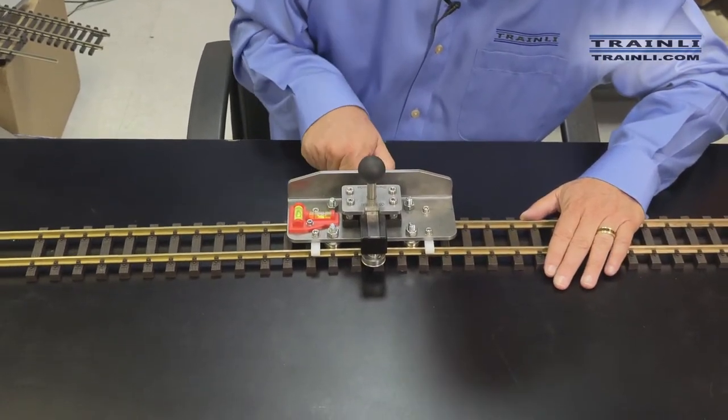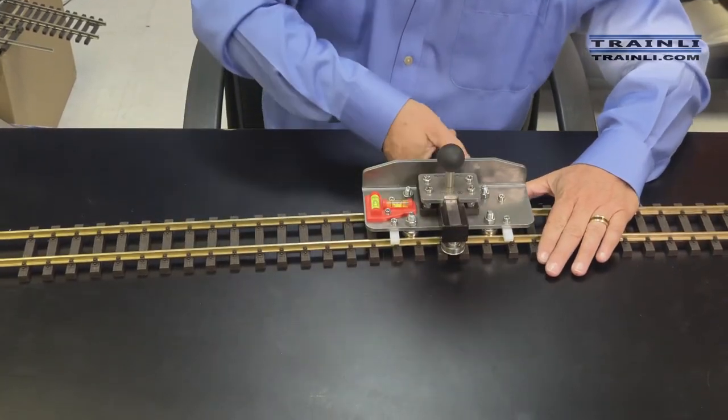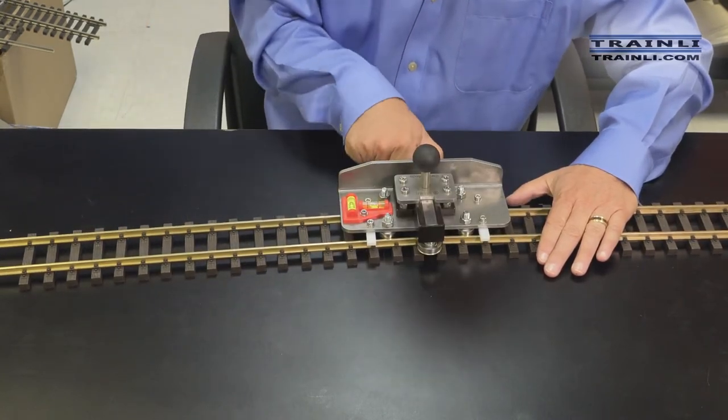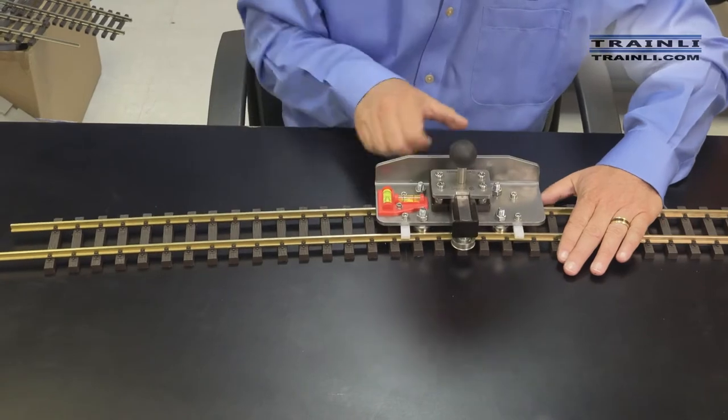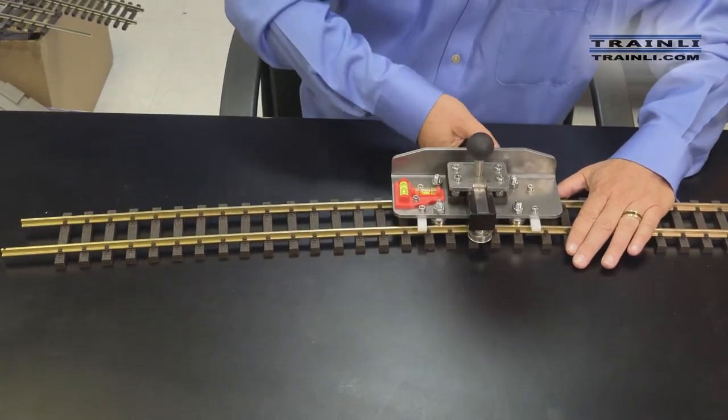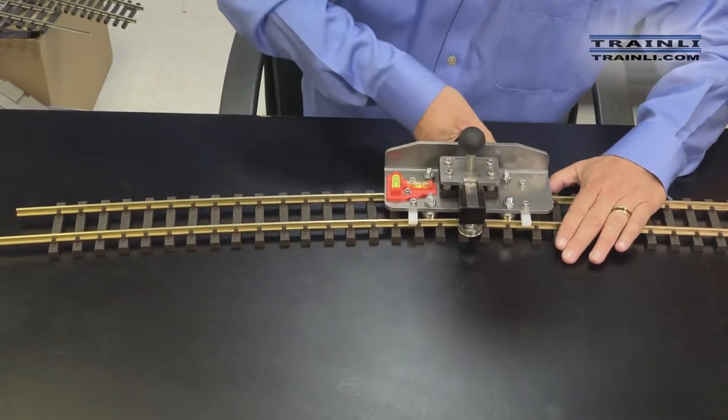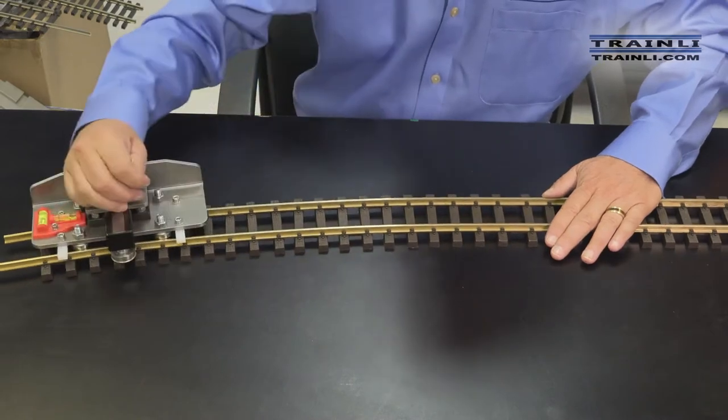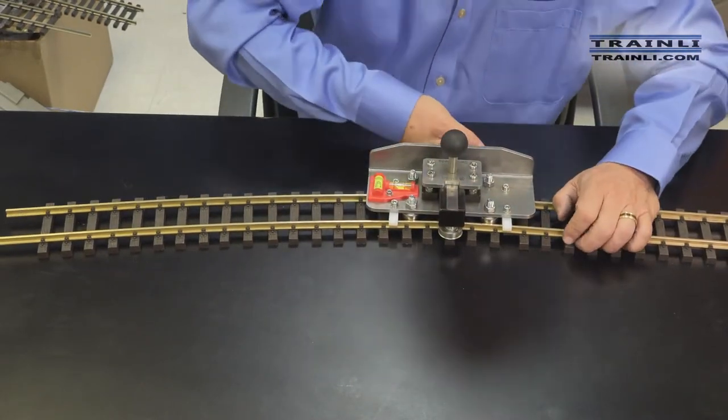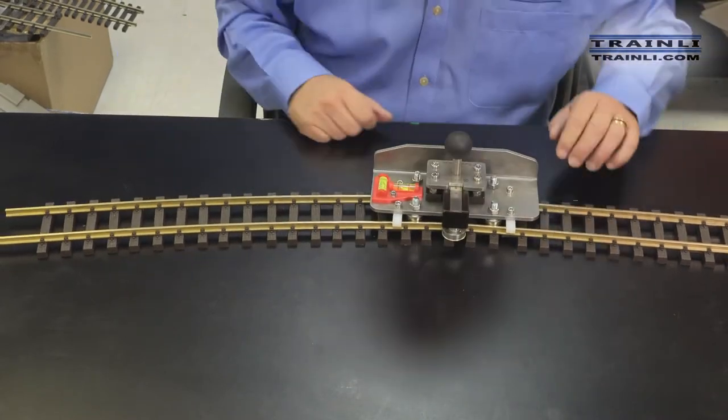Then what I do is I add a couple of quarter or half turns, and I just start going back and forth like this. And as you can see, it's now bending the rails. And you can do this right in place as you are laying your track on your layout, just like that.